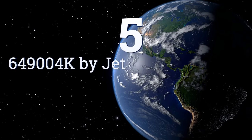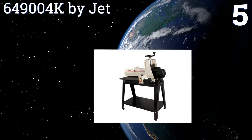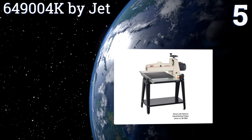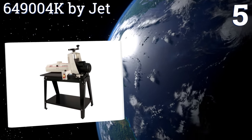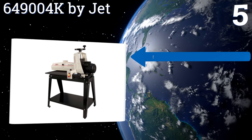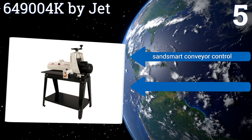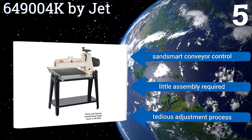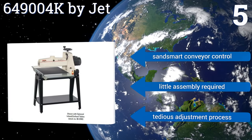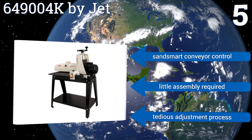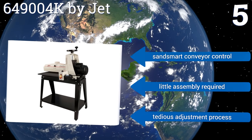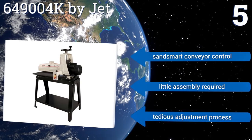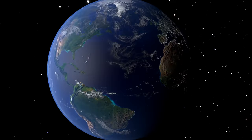Coming in at number five on our list, the 649004K by Jet boasts a one and three-quarter horsepower motor spinning its drum above a precision-flattened reinforced steel conveyor bed, making for smoother feeds, more perfect levels, and greater quality out the back end. Its dust port, though effective, feels small for its size. It features Sand Smart conveyor control and little assembly is required, but it does also have a tedious adjustment process.